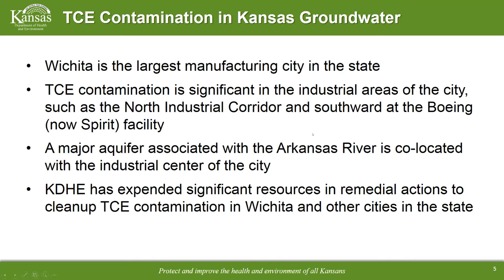Another example is the Boeing facility, now Spirit, in southern Wichita. There's a bullseye of red here showing concentrations of over 100,000 micrograms per liter — still pretty high concentrations, but the plume used to be a lot more widespread. TCE is the common contaminant here. Boeing has instituted a variety of remedial techniques and has been very proactive, trying to do a lot of things to clean up the contamination, working with KDHE and the City of Wichita to come up with various strategies.